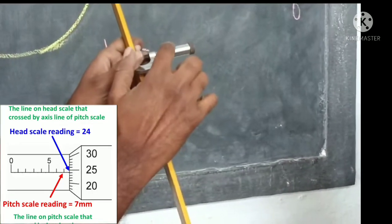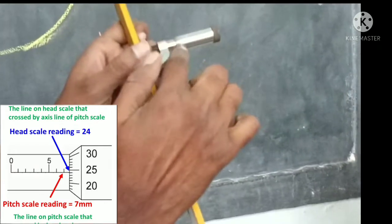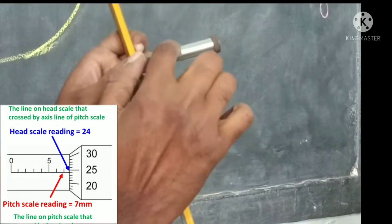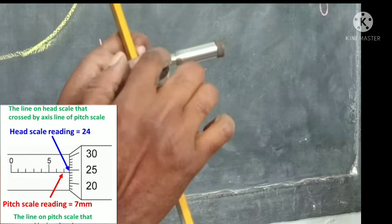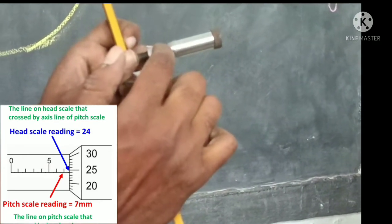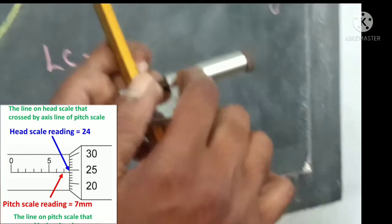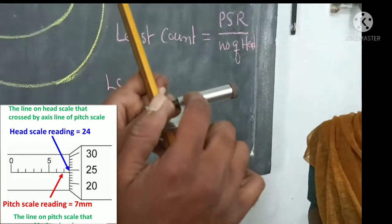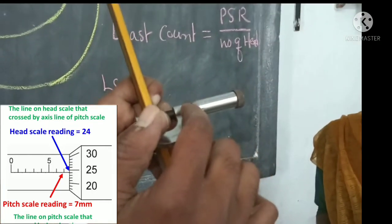On this head scale, you have to find out what line it is crossing on the pitch scale. You have to find the reading of the pitch scale — in such a way that the head scale is crossing what line on the pitch scale.